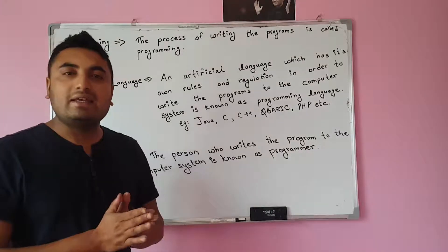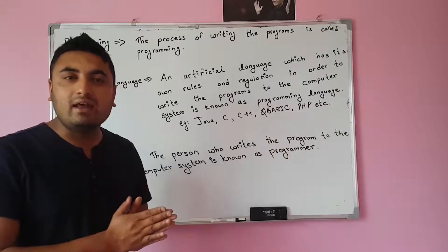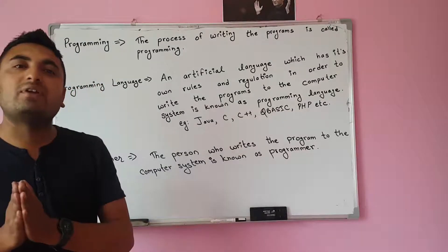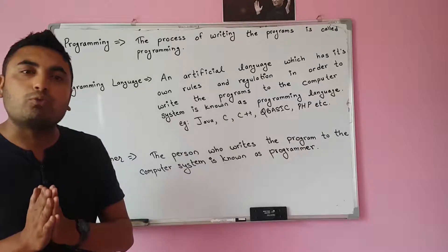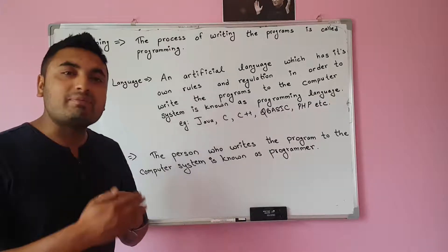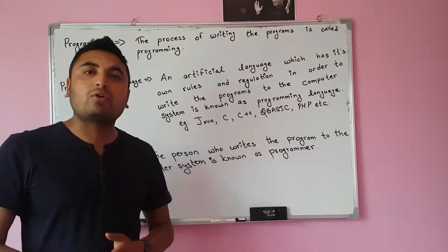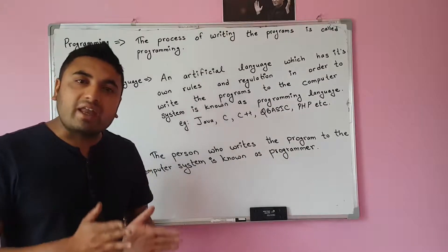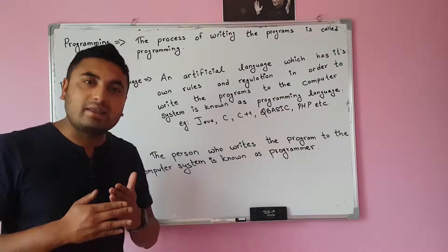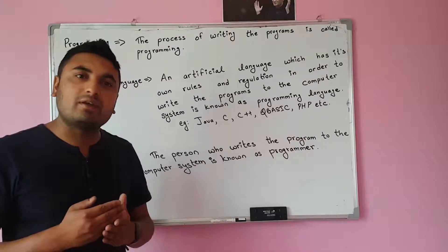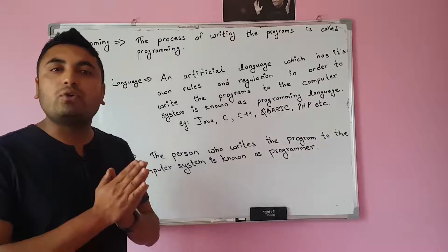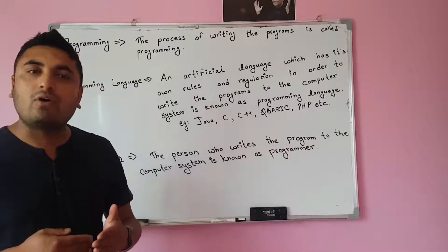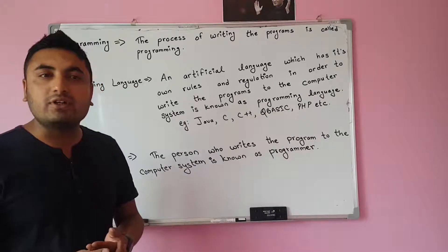A computer is an electronic machine. You take some data, process it according to predefined instructions and give some result as output, so a program is required. For example, if you don't have a game installed, then you cannot play the game. If we don't have Windows 10 in our computer system, then we cannot use our laptop or computer.